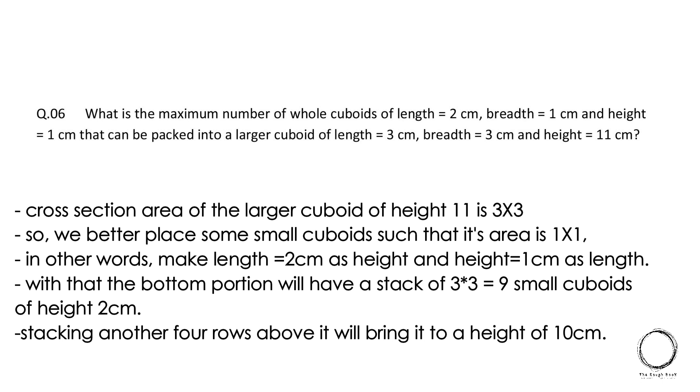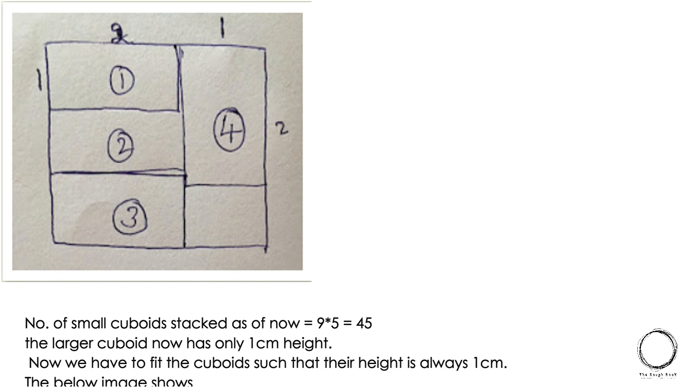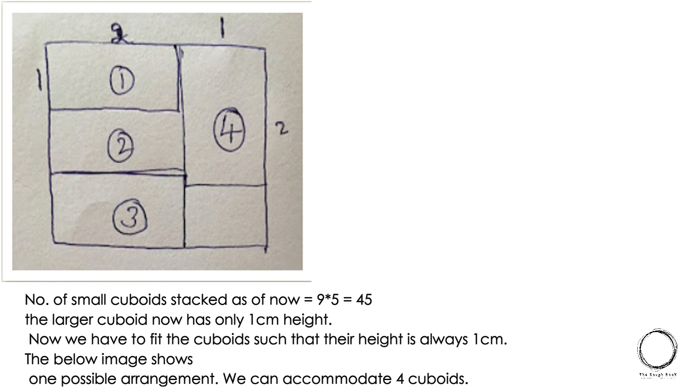With that, the bottom portion will have a stack of 3 x 3 which is equal to 9. Small cuboids of height 2 cm stacking another 4 rows above it will bring it to the height of 10 cm. The larger cuboid now has only 1 cm height. Now we have to fit the cuboids such that the height is always 1 cm. The below image shows one possible arrangement. We can accommodate 4 cubes. So with the similar case, the right answer is 49.